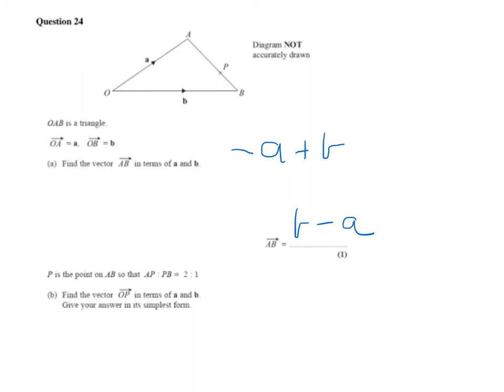Now P is on AB such that the distance from A to P is double the distance from P to B, and we've got to find the vector OP in terms of A and B in its simplest form.